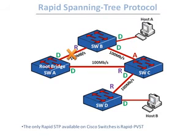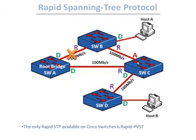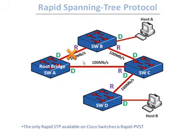If the link between switch B and switch A fails — meaning switch B's root port fails — when switch B determines its new root port and sends a BPDU to switch C, switch C will not wait to determine whether opening the port causes a loop. Instead, it immediately makes the port a designated port upon receiving the BPDU indicating this is switch B's new root port. This is because switch B would only change its root port if the topology failed elsewhere — meaning the loop is already broken at another point.